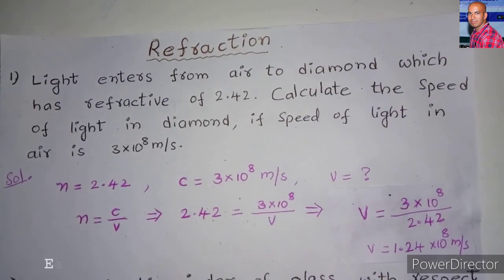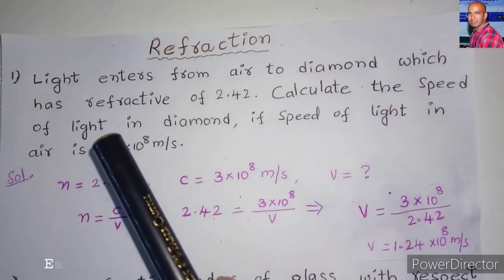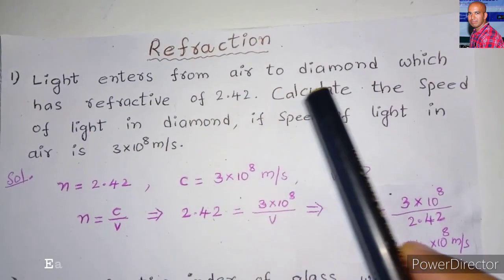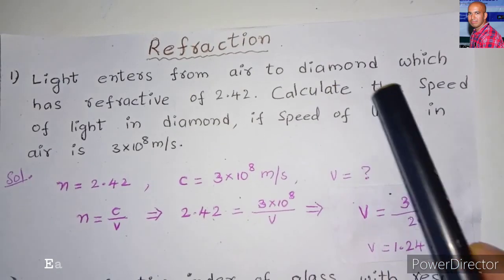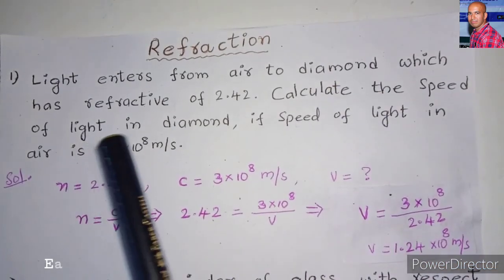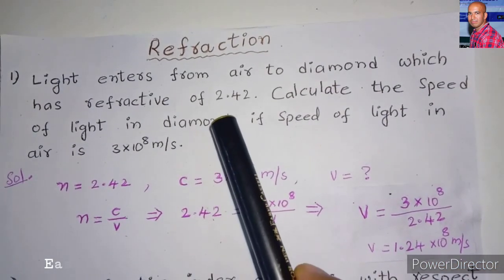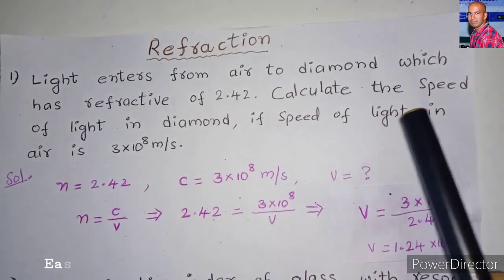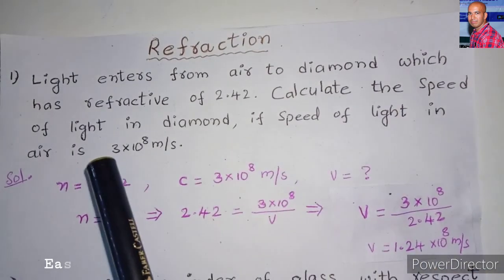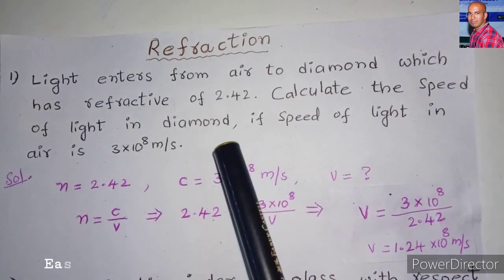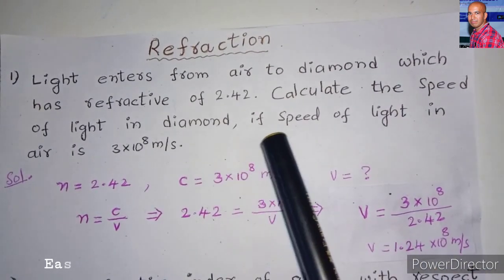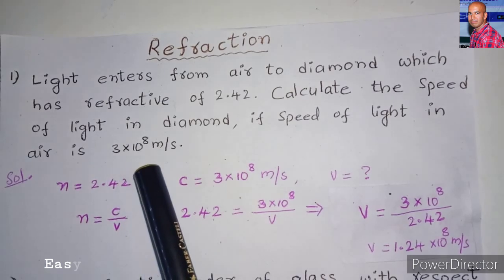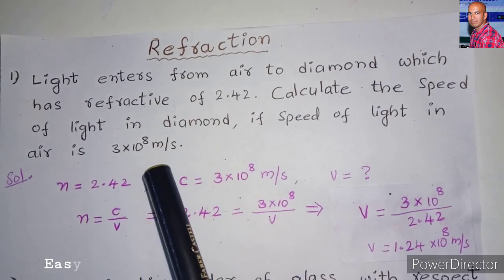First problem: light enters from air to diamond, which has a refractive index of 2.42. Calculate the speed of light in diamond if the speed of light in air is 3 × 10⁸ meters per second.